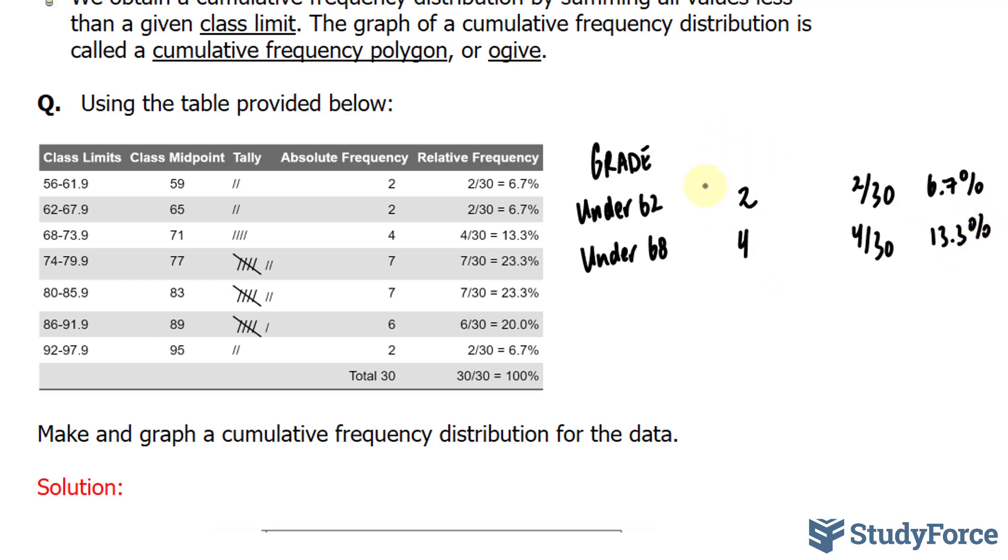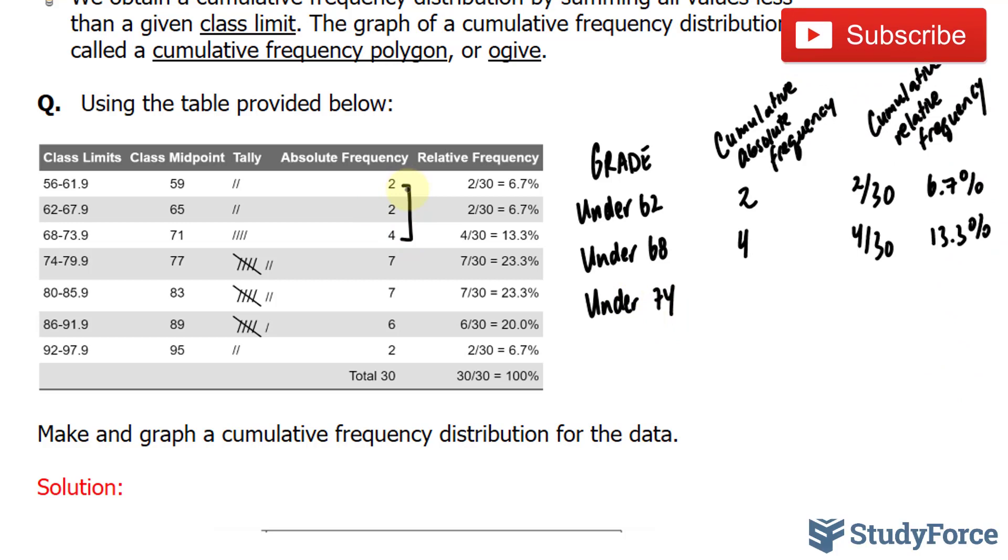So this column right here is the cumulative absolute frequency. And this column represents the relative frequency. Let's find out how many students scored a grade less than 74. Under 74. That will include everything above. So 4 plus 2 plus 2 is 8.